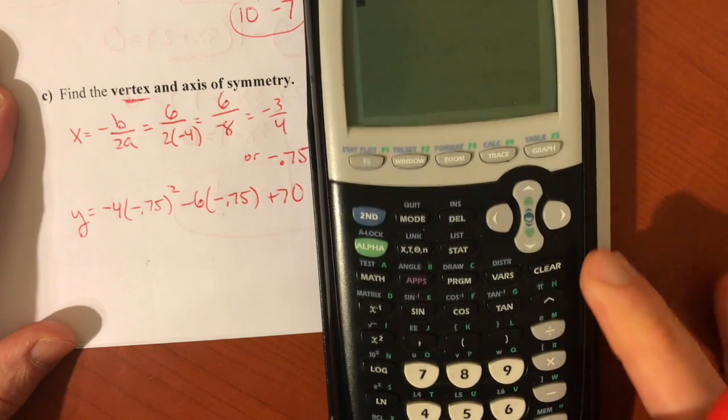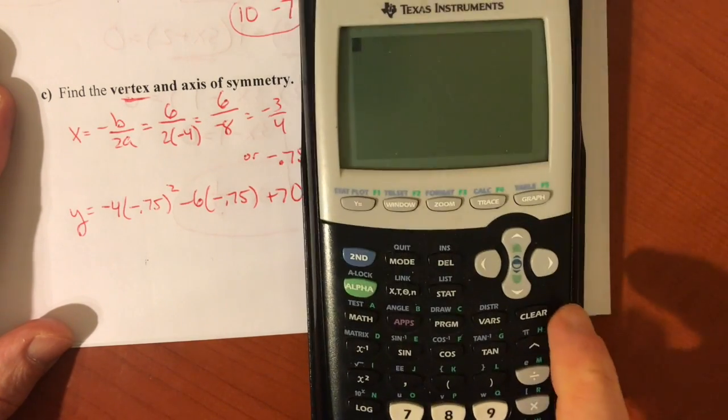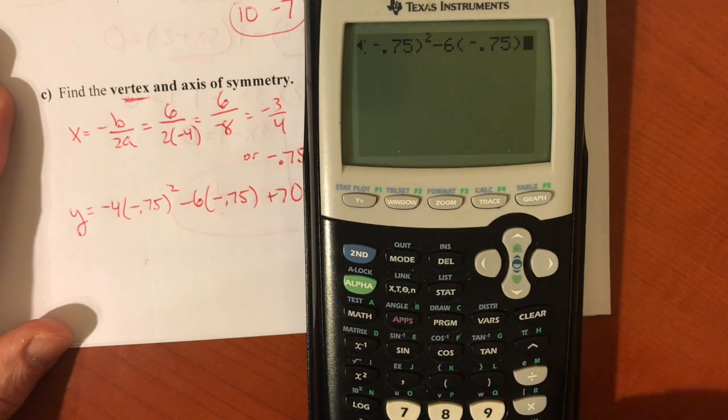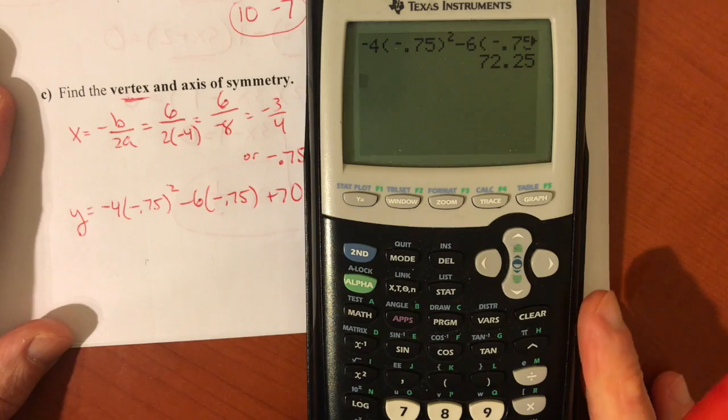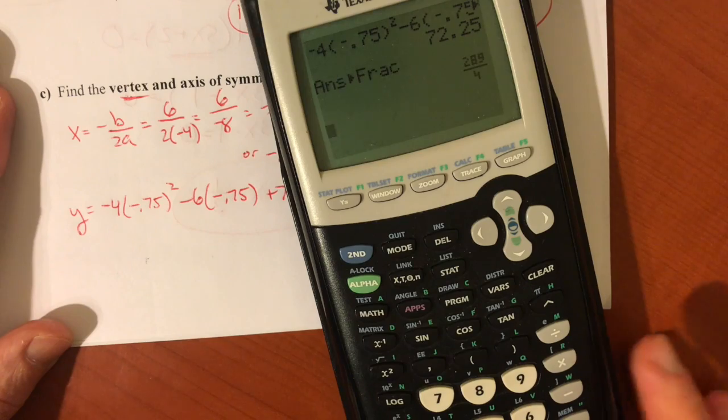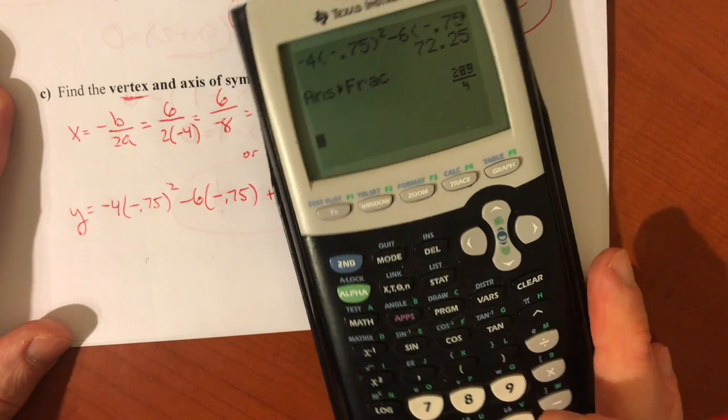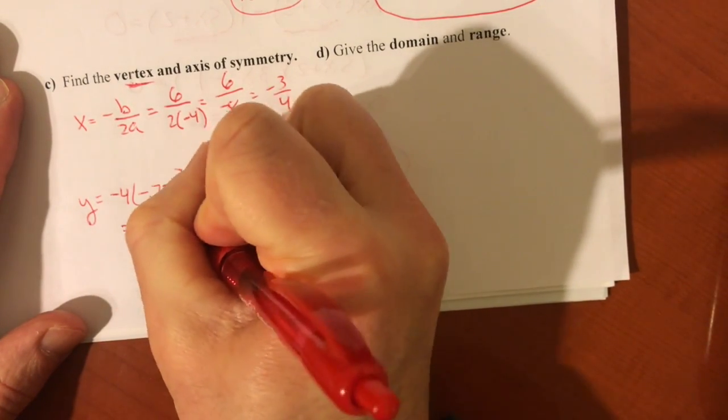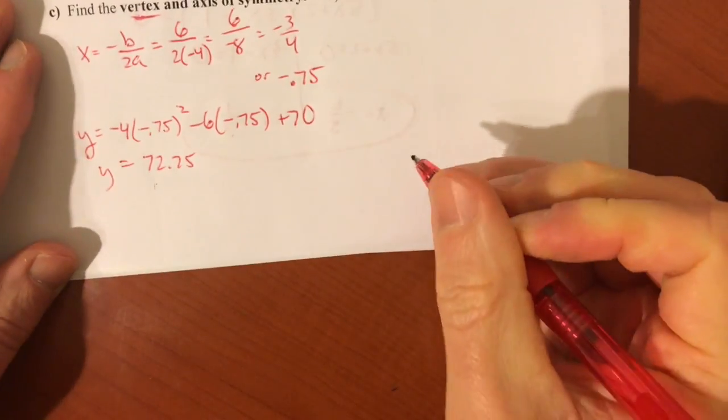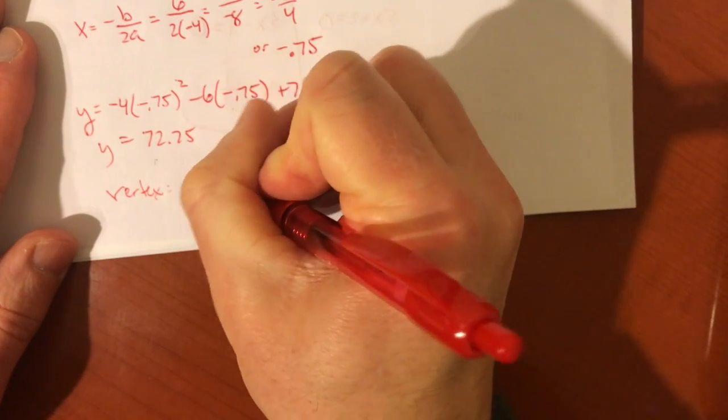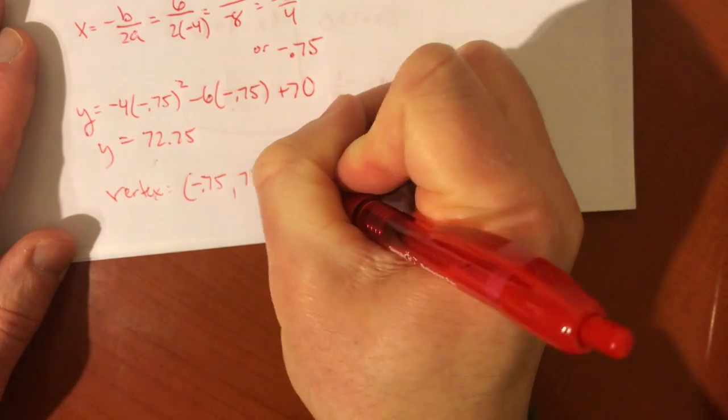And you can do this on your own. You can use a calculator to help you out. Negative 4, negative 0.75 squared, minus 6, times negative 0.75, plus 70. It gives you a 72.25, 72 and a quarter. Or if you want to make a fraction out of that, it would be 289 fourths if you want the improper. But I'm fine using a decimal here because it's not rounded. And so your vertex is negative 0.75, 72.25.